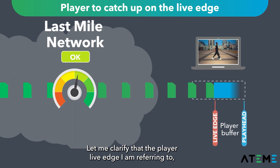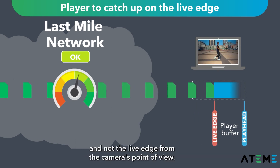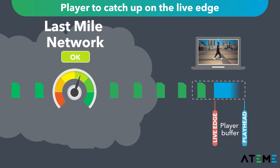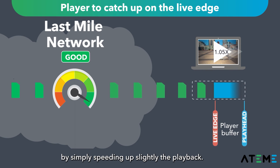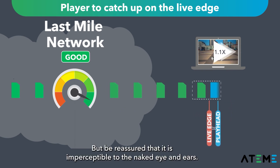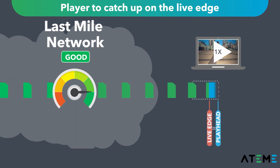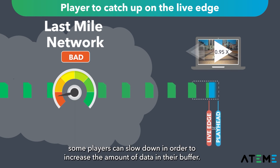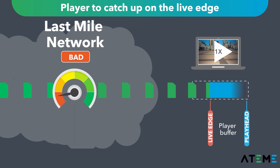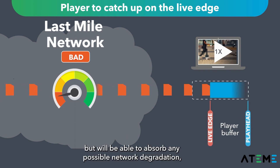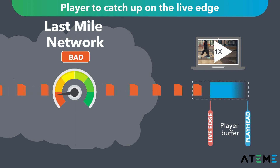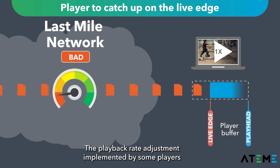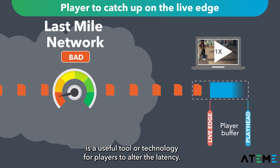The player live edge referred to here is from the player's perspective, not from the camera's point of view. When network conditions are good, some players have implemented a mechanism to get closer to the live edge by simply speeding up playback slightly — imperceptible to the naked eye and ears. When network conditions deteriorate, some players can slow down in order to increase the amount of data in their buffer. Those players will get farther from the live edge, but will be able to absorb any possible network degradation, resulting in a good playback experience without the dreaded buffer spinner. The playback rate adjustment implemented by some players is a useful tool for players to actually alter the latency.